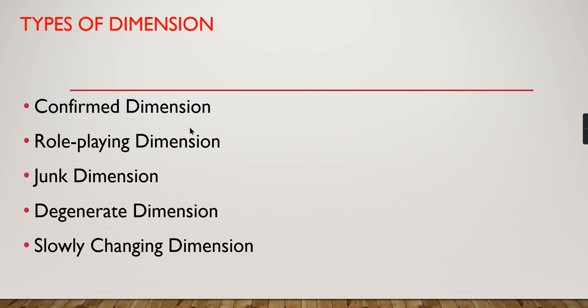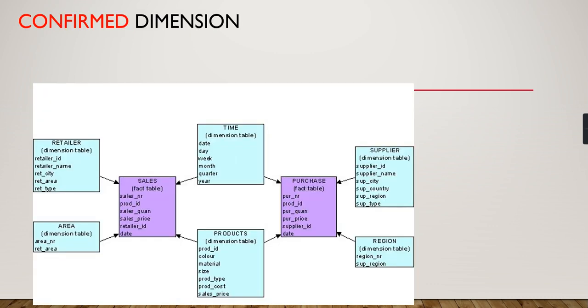The types are: conformed dimension, role-playing dimension, junk dimension, degenerated dimension, and slowly changing dimensions. Once you create a dimension in a typical star schema, based on the different roles it plays or how you design it, it can be named accordingly — conformed, role-playing, junk, and so on. We will see how to define each based on the requirement, starting with conformed dimensions.